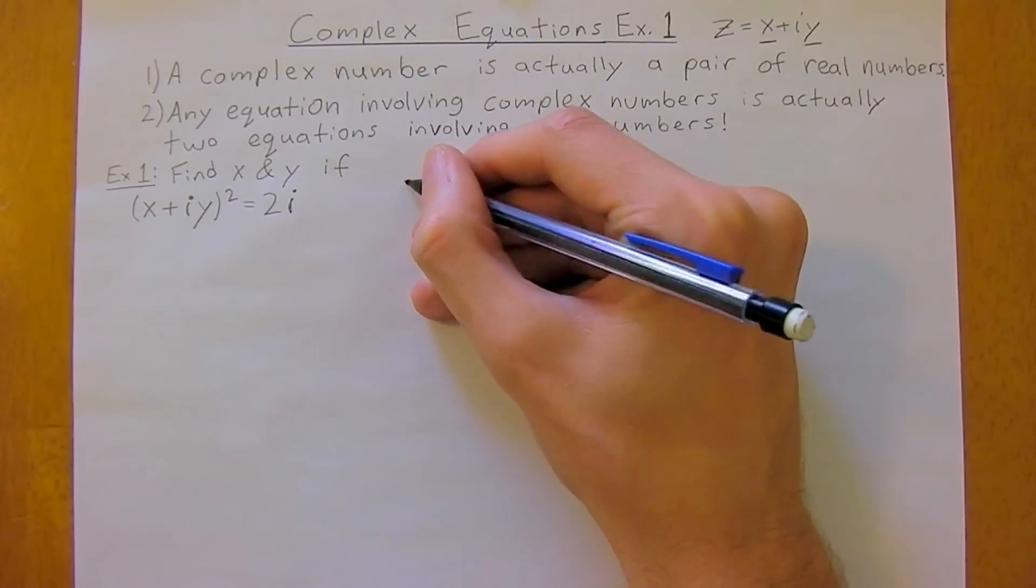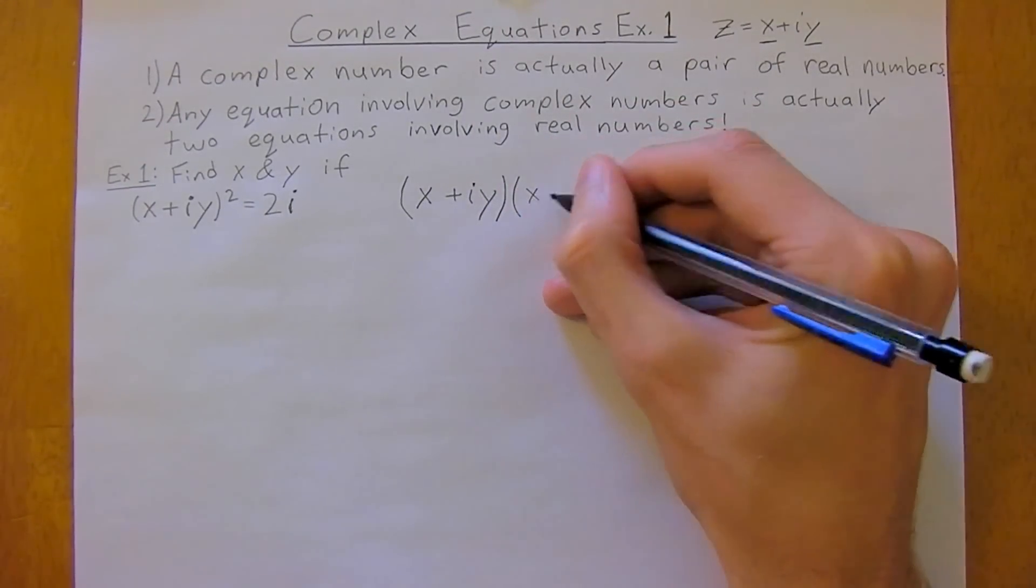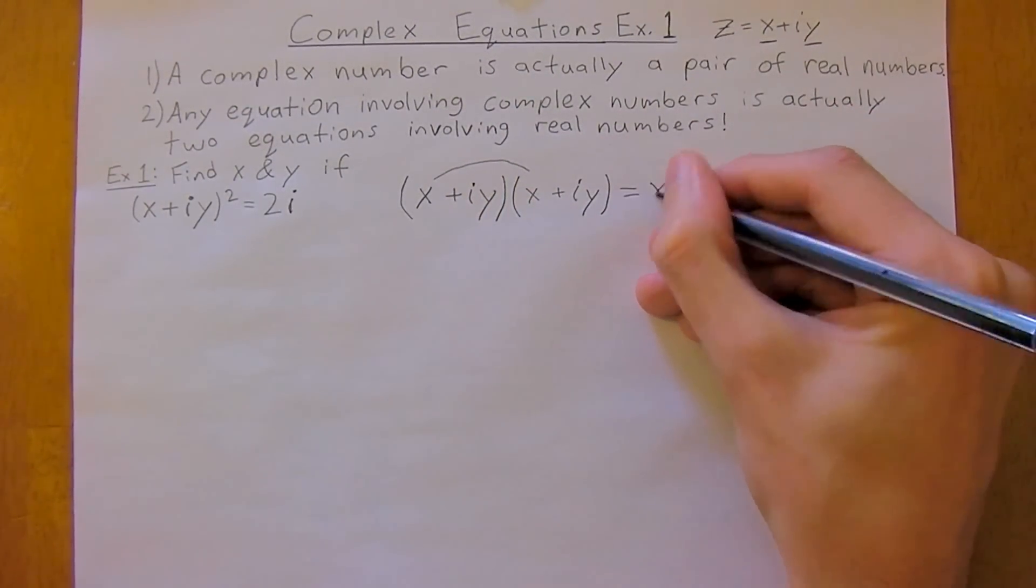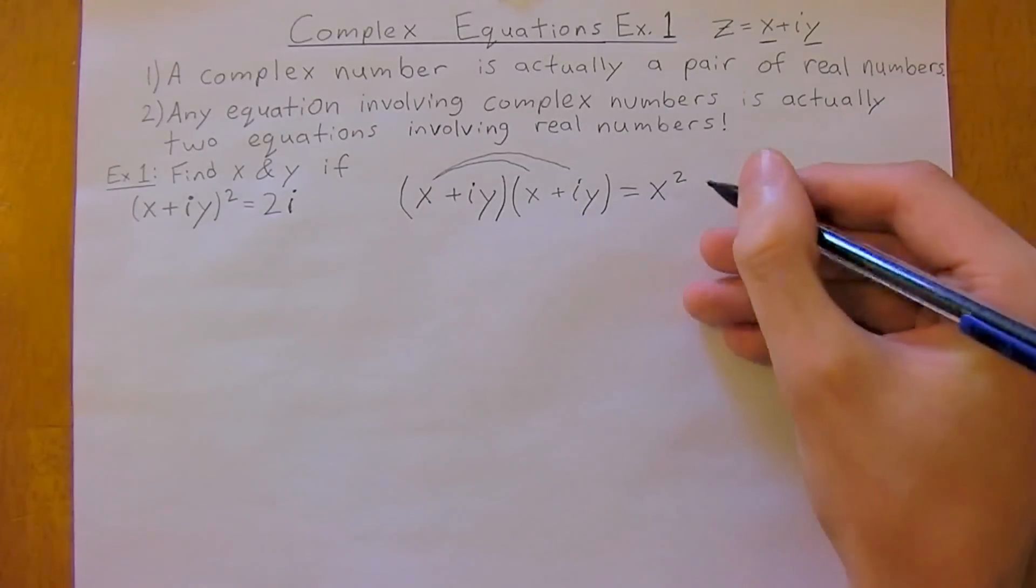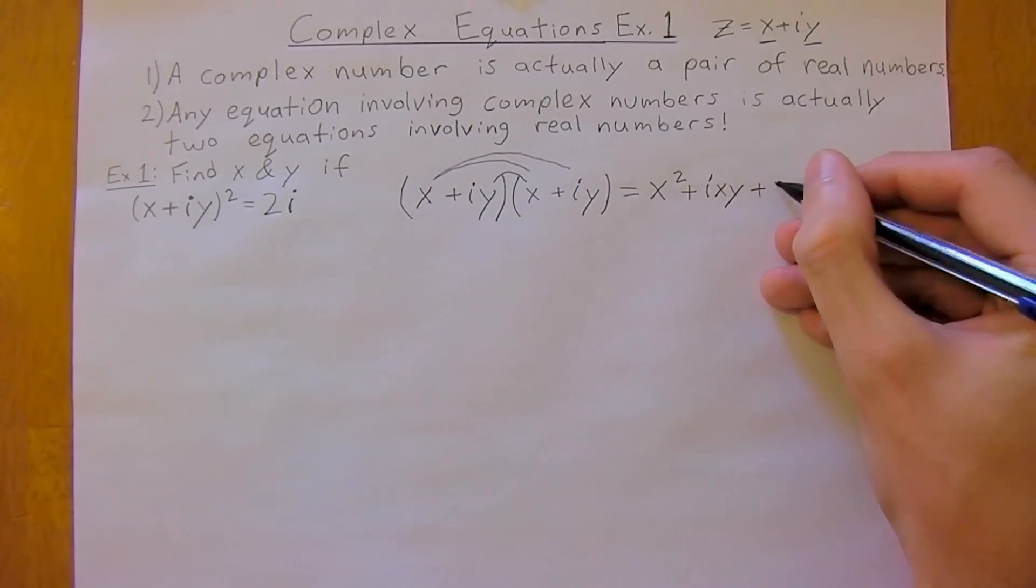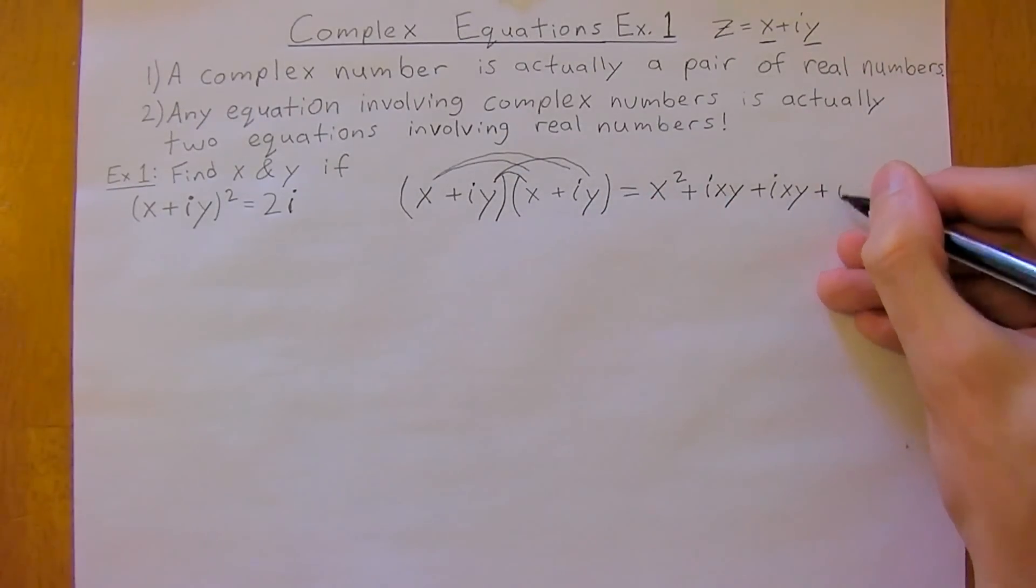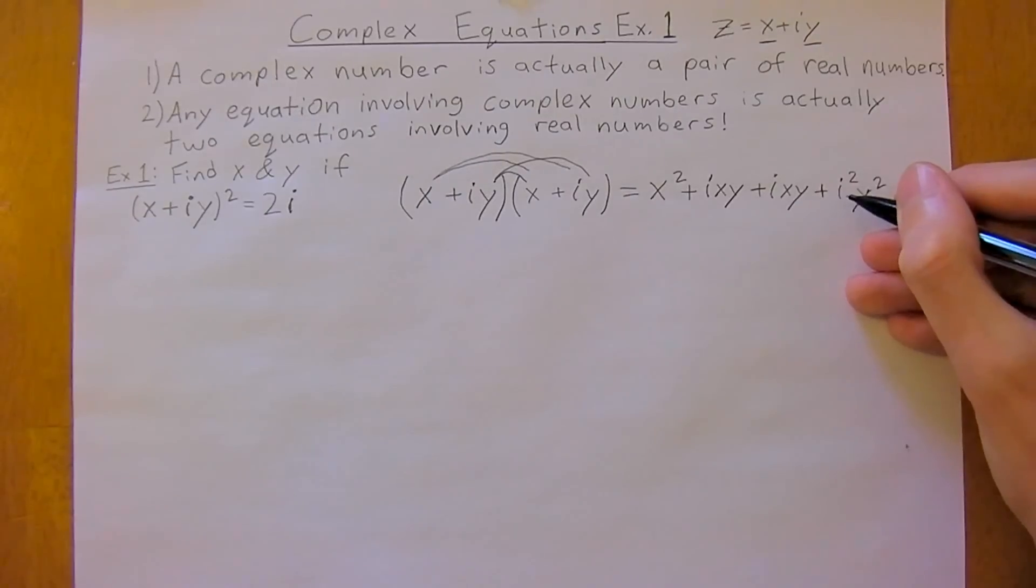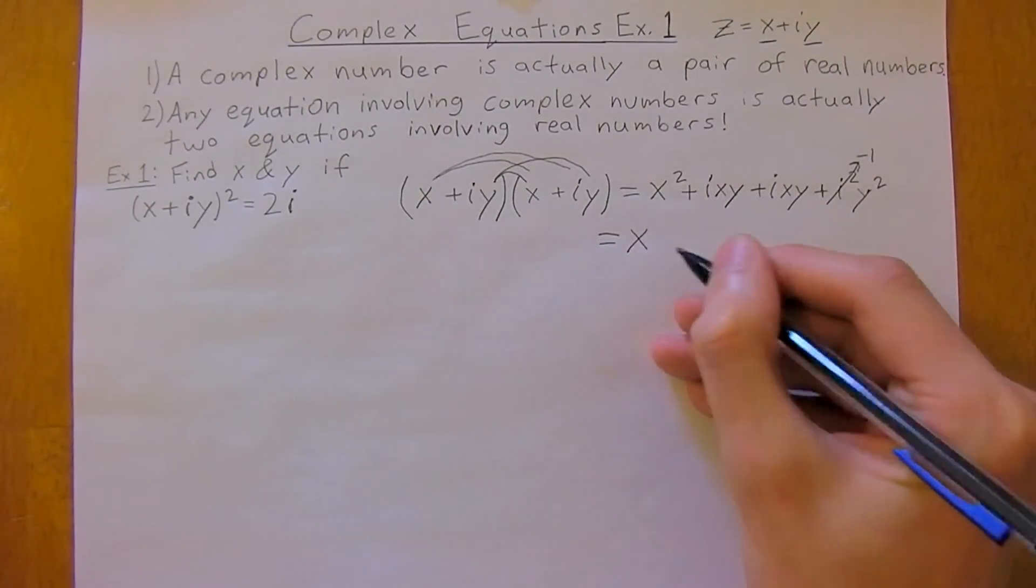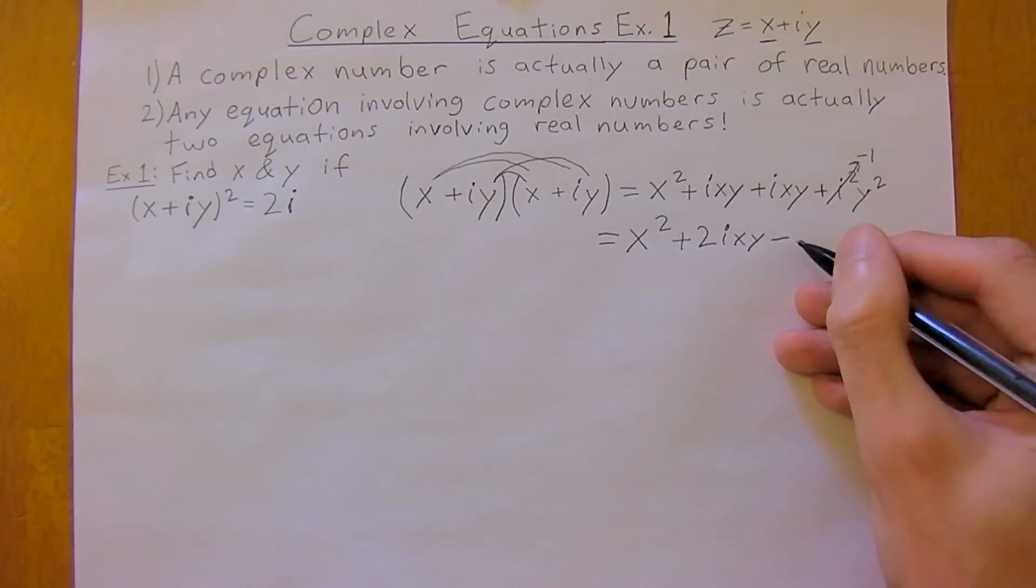The first thing we do is figure out this left term. So x plus iy times x plus iy. We're going to FOIL it out. The first term is x squared, then x times iy is plus ixy, then again we have another ixy, and then we have i squared and y squared. Recall that i squared is just negative 1. So we can write this another way now: x squared plus 2ixy minus y squared.